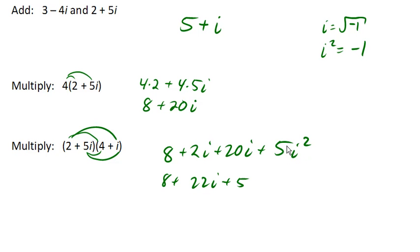So notice that this term ends up being real. So 5 times negative 1 is negative 5. 8 plus negative 5 is 3. And we end up with 3 plus 22i. Notice that the product of two complex numbers is itself, again, a complex number.